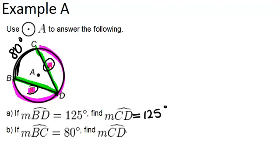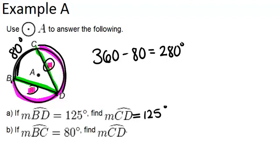If BC is 80, that means the rest of the circle is 360 degrees minus 80, because the whole circle is 360 degrees. So that means the rest of the circle is 280 degrees. And that has to be split evenly between CD and BD, because we already know they have to be the same measure. So if we divide that by 2, we get 140 degrees, which means that the measure of arc CD must equal 140 degrees.